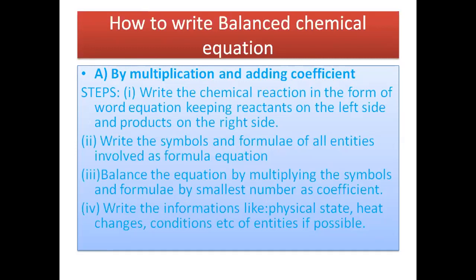The steps involved are: first, write the chemical reaction as a word equation, keeping reactants on the left side and products on the right side separated by an arrow. Second, write the symbols and formulae of all entities involved as a formula equation. Third, balance the equation by multiplying symbols and formulae by the smallest number written as a coefficient.